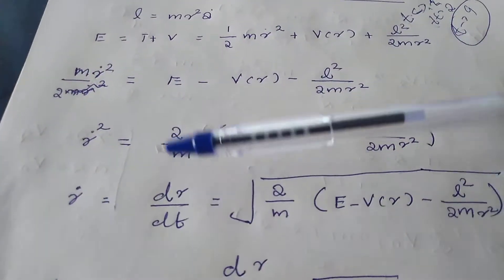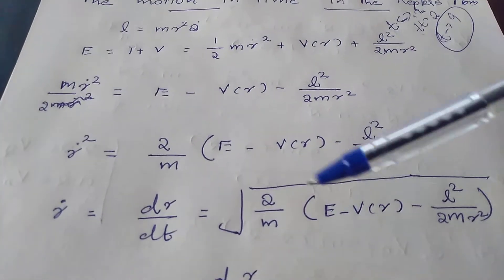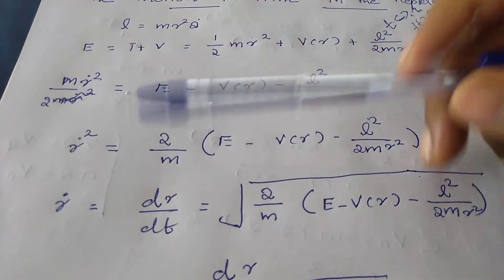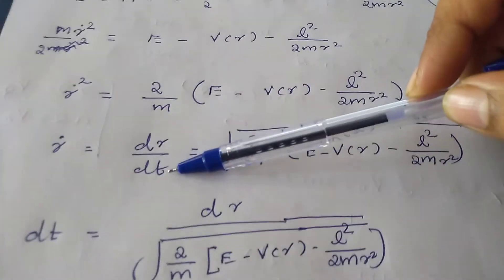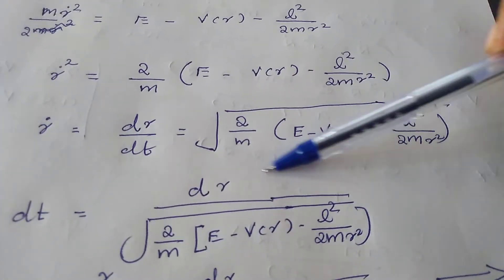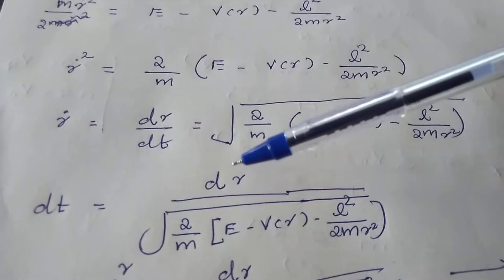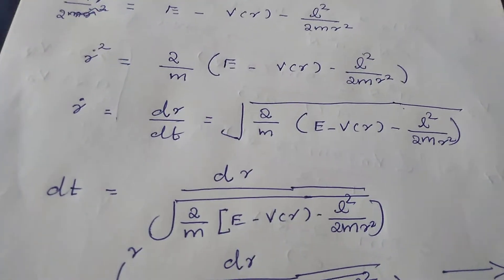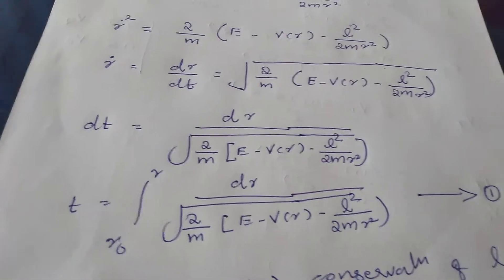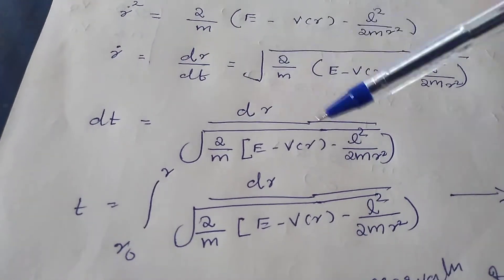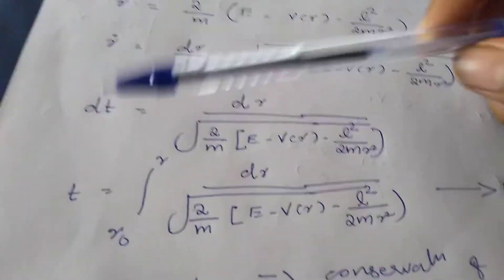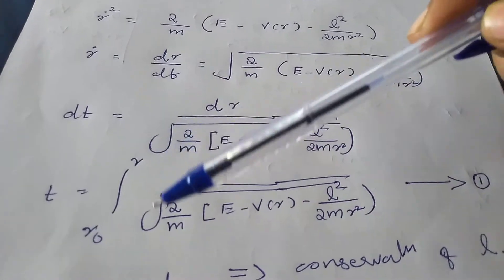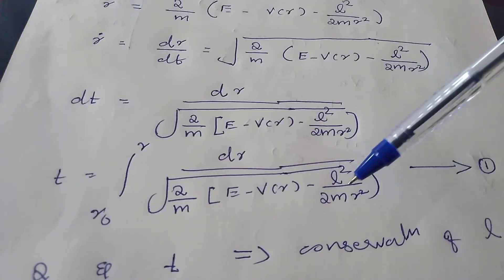So r-dot is equal to dr by dt, which equals the square root of 2 by m times [E minus V of r minus L squared by 2mr squared]. So dr by dt gives us t in terms of r. Using variable separable method, dt is equal to dr divided by the square root of 2 by m times [E minus V of r minus L squared by 2mr squared]. We put this as equation number one: t equals the integral from r0 to r of dr over the square root of 2 by m [E minus V of r minus L squared by 2mr squared].